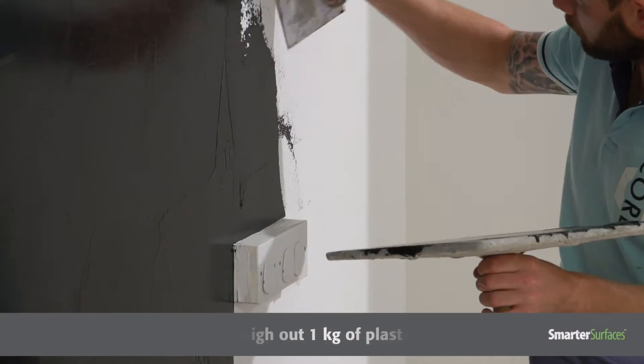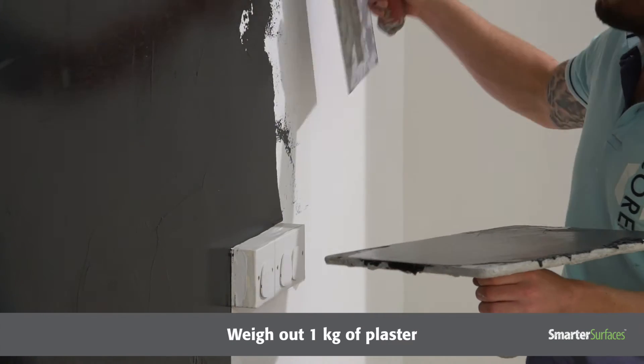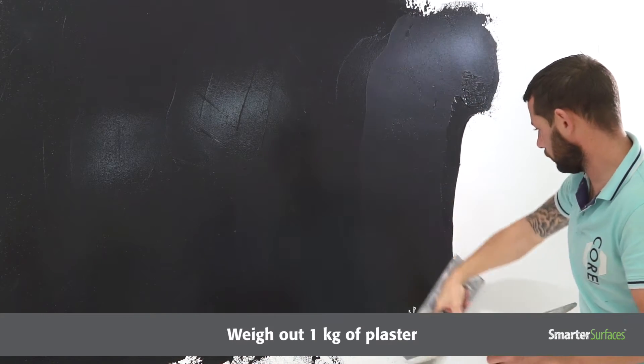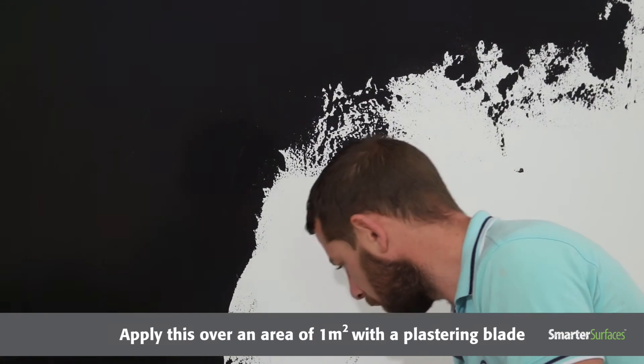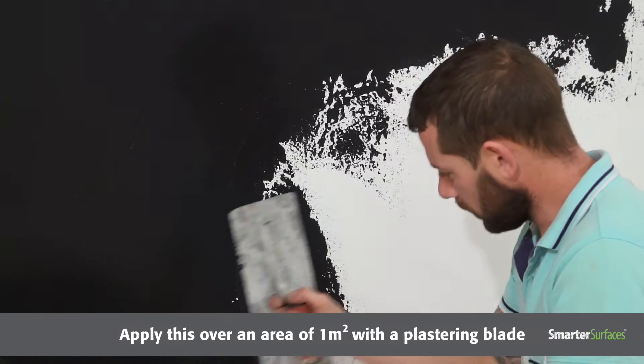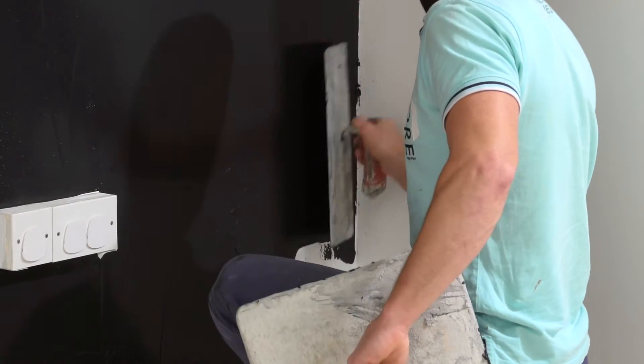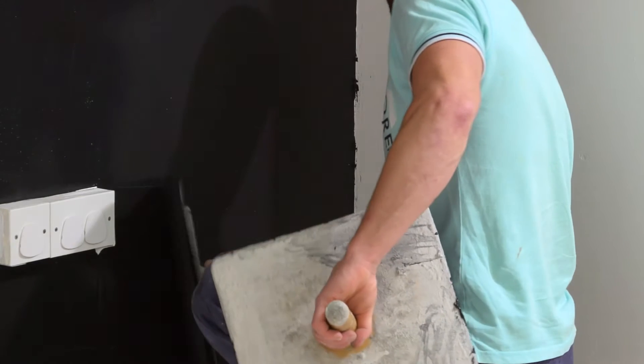For non-professional installers, weigh out 1 kilogram of plaster. Apply this over an area of 1 meter square with a plastering blade. Once applied, spread the plaster evenly across the area with a short pile roller sleeve. Repeat this process on the next 1 meter square area.